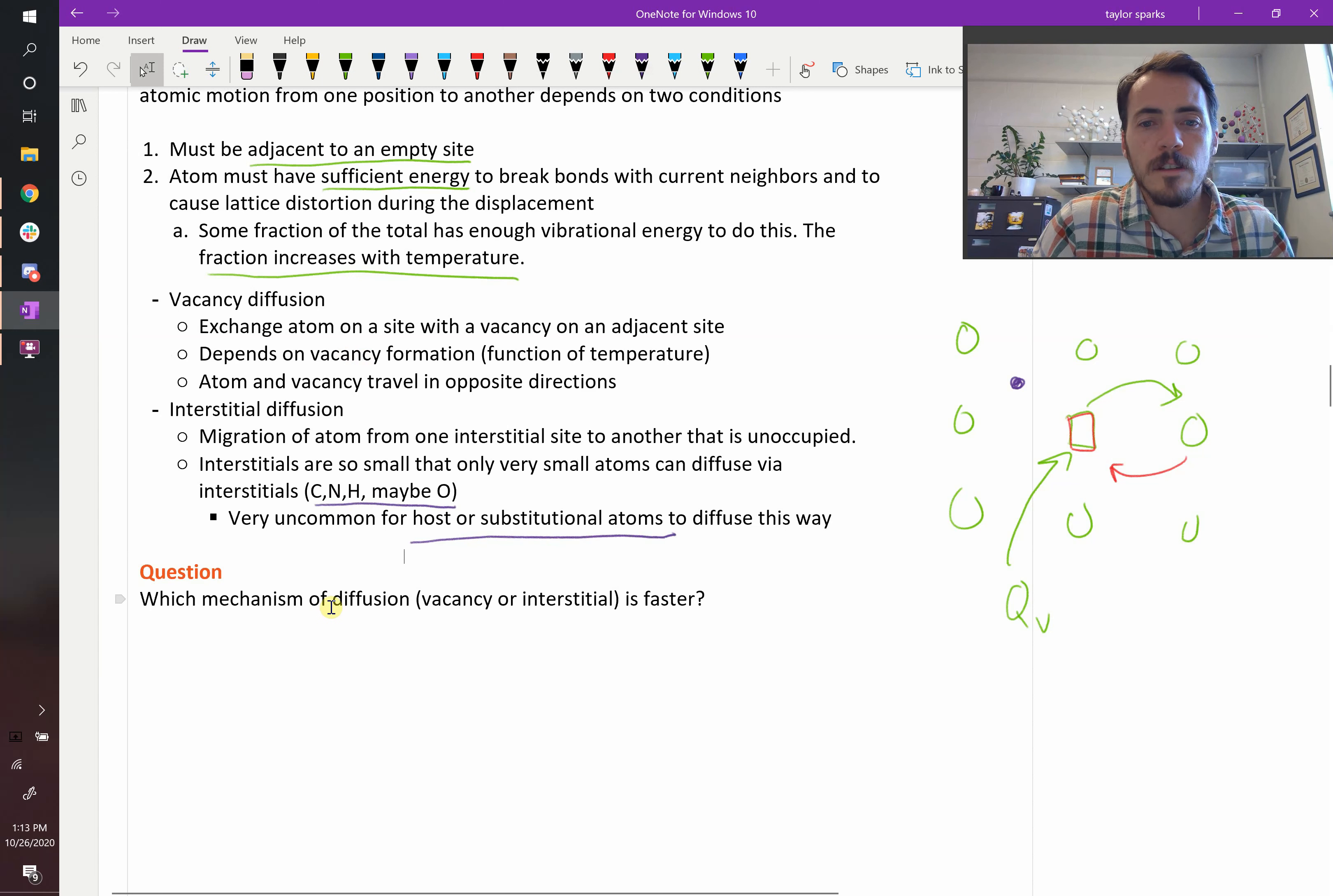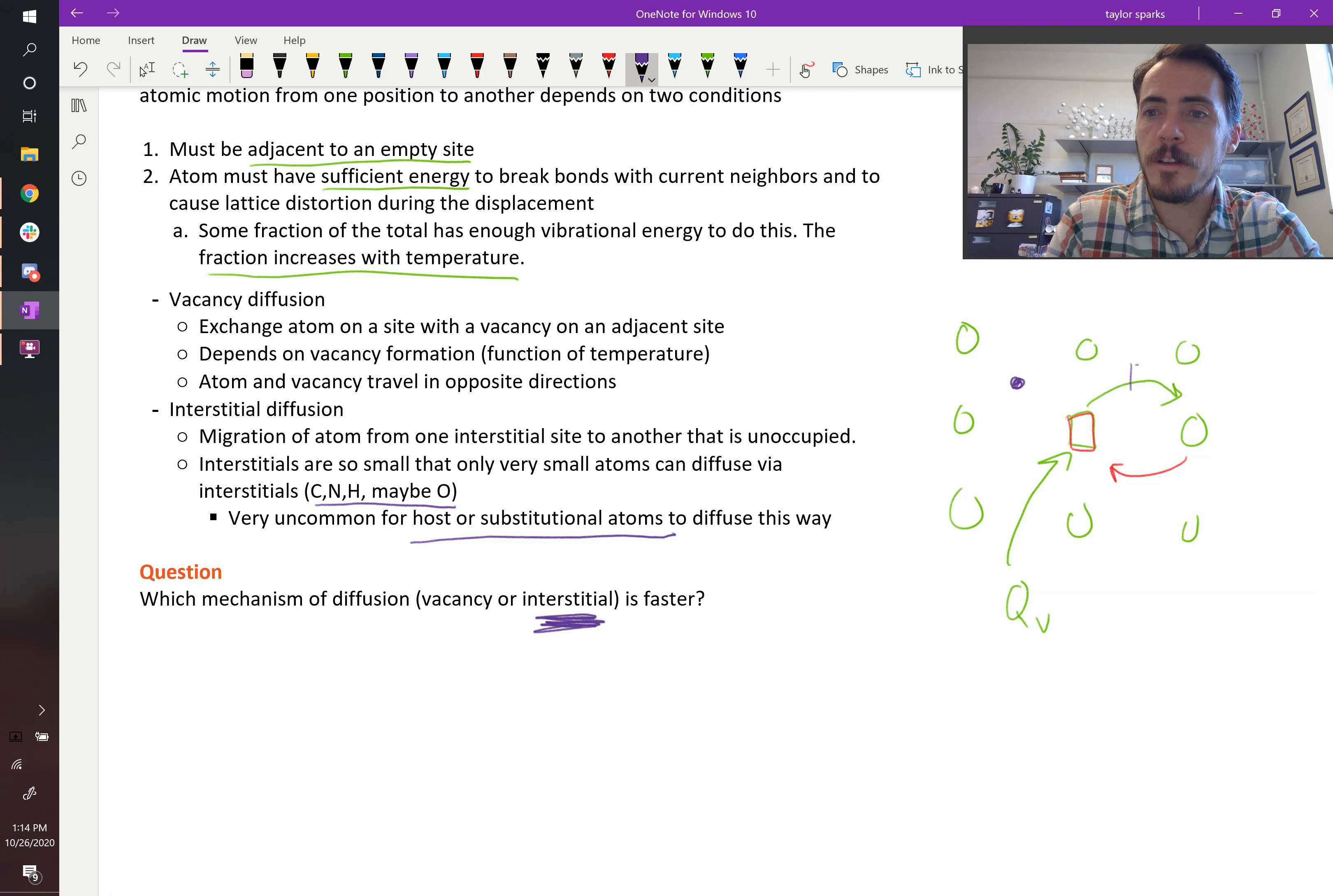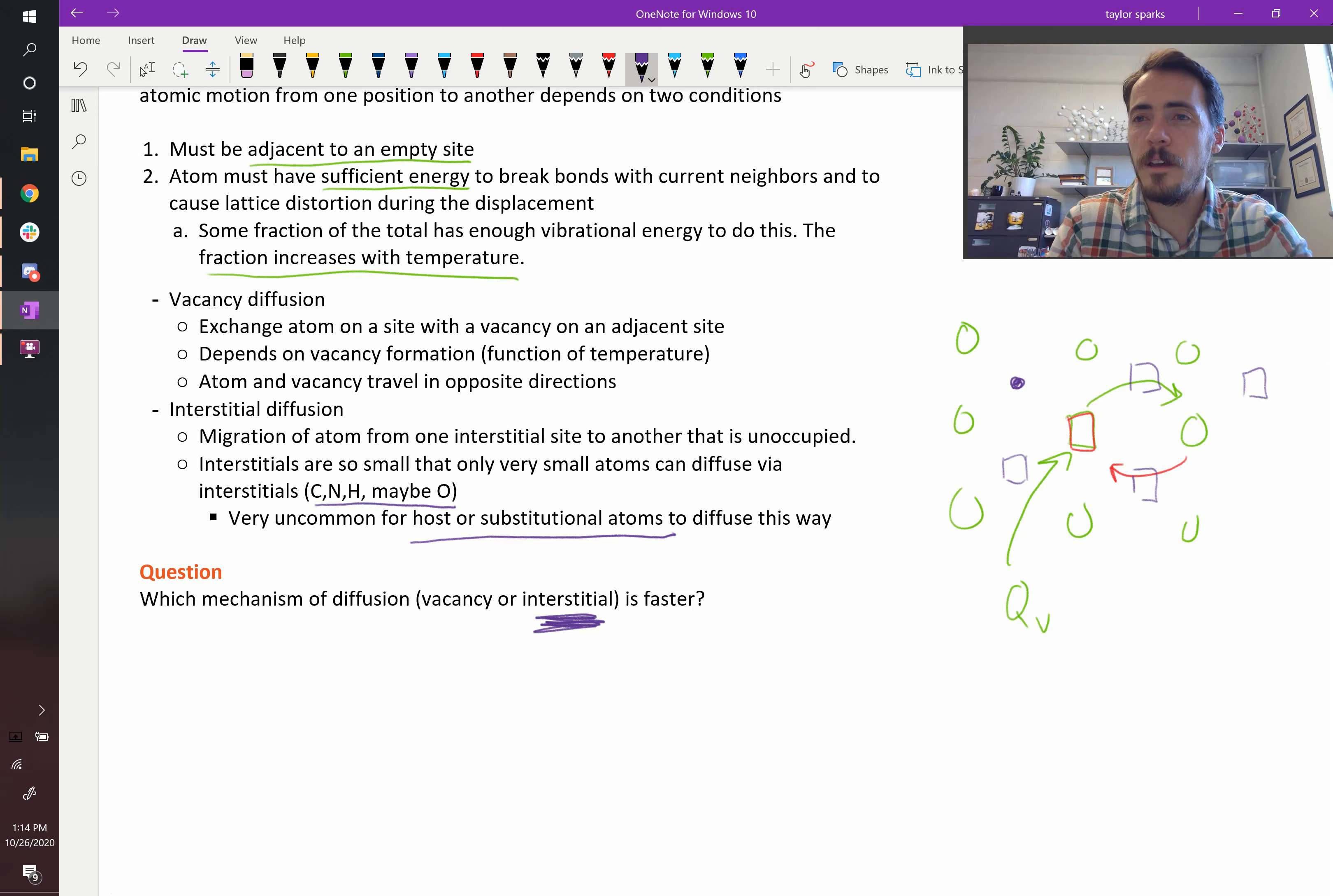So the question is, which mechanism will be faster for diffusion? Will it be vacancy or interstitial, and why? It's going to be interstitial for sure. It's way faster. For one thing, it's basically pure vacancies. All these interstitials are already vacant. So it's not like you're waiting for a vacancy to come by. You're not relying on some low number of vacancy concentrations. But the other reason is that these are small atoms. So for them to squish through here and go to that next spot, they're not really pushing on these atoms very much. They're much smaller, and so there's less distortion. So both of those reasons combined makes interstitial diffusion far faster than vacancy diffusion.